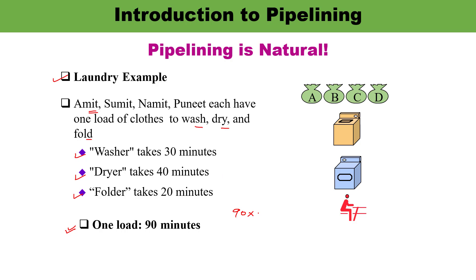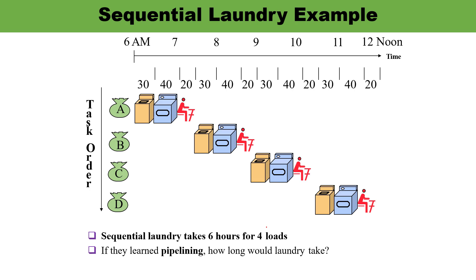Because each one is having 90 minutes, the total time required would be 360 minutes. In sequential laundry, when the first person Amit is performing the task — first washing, then drying, then folding — the next person will start only when the first completes the task, then washing, drying, folding again. So total six hours is being taken for four loads.